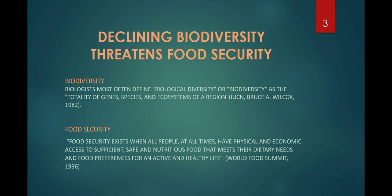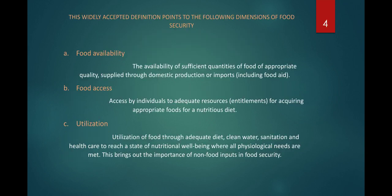Food security exists when all people at all times have physical and economic access to sufficient, safe, and nutritious food that meets their dietary needs and food preferences for an active and healthy life. This widely accepted definition points to the following dimensions of food security. The first dimension is food availability: the availability of sufficient quantities of food of appropriate quality, supplied through domestic production or imports.